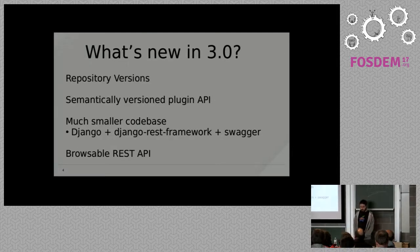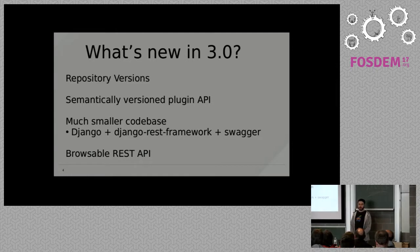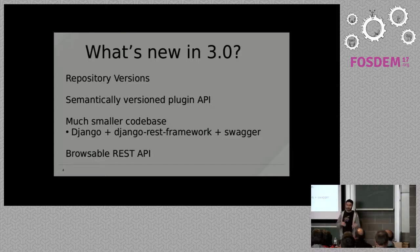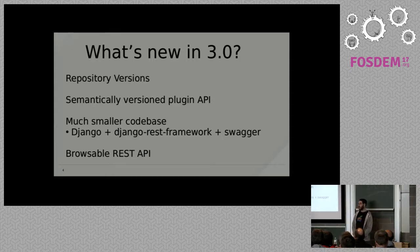The greatest feature we're adding with Pulp 3 is versioned repositories, which means that every time you change content in a repository, a repository version is created and it is immutable. You can publish that version or roll back to that version, and it just makes things much smoother than Pulp 2.